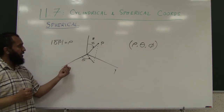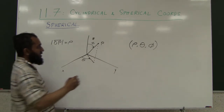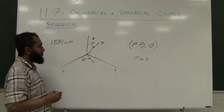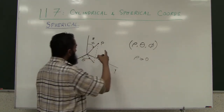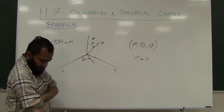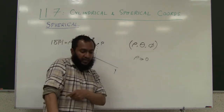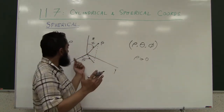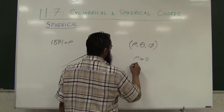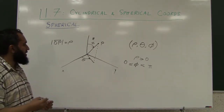Having described these three quantities giving the location of the point in the spherical coordinate system, let's look at the restrictions. Rho, being the distance from the origin, is greater than or equal to zero. Phi, because you open with respect to the z-axis: if you open 90 degrees you are on the x-y plane, and if you open 180 degrees you are along the negative z-axis. So the restriction is that phi is between zero and pi, i.e., between zero and 180 degrees.